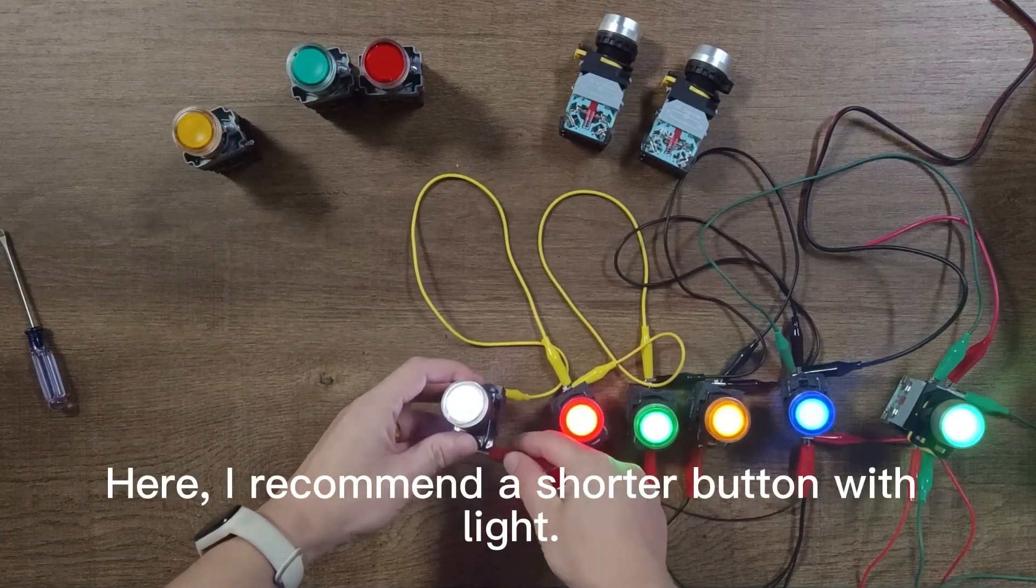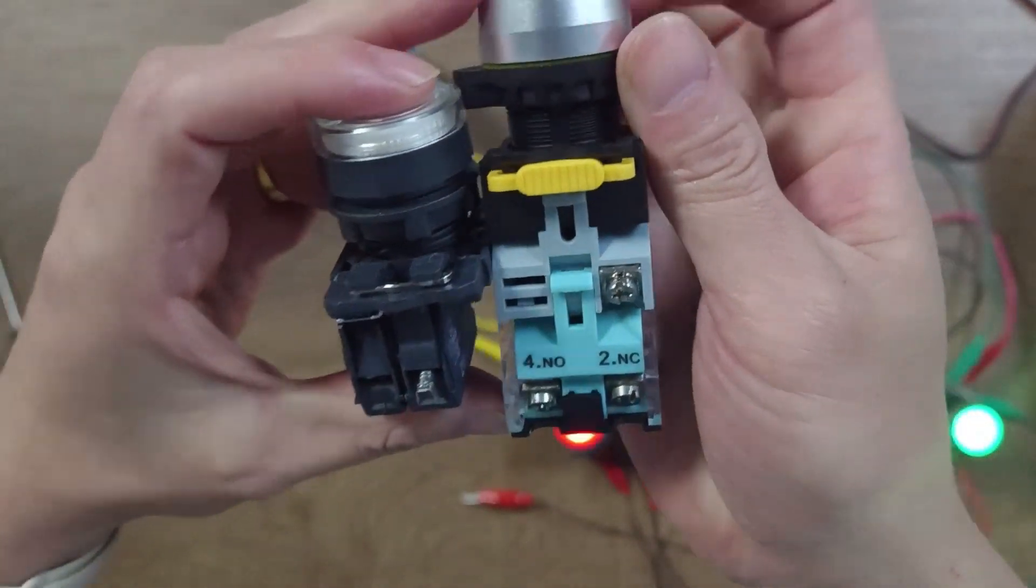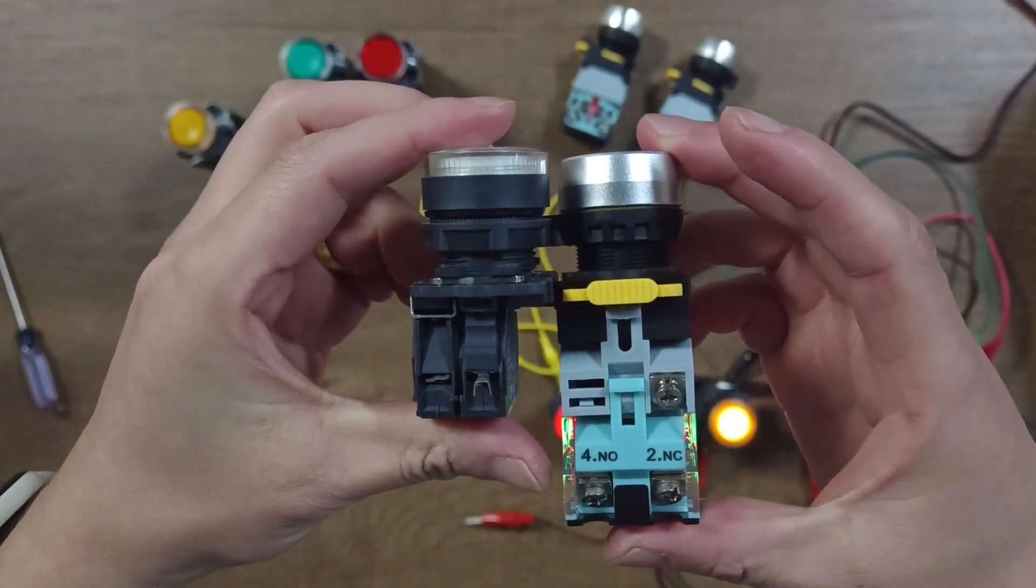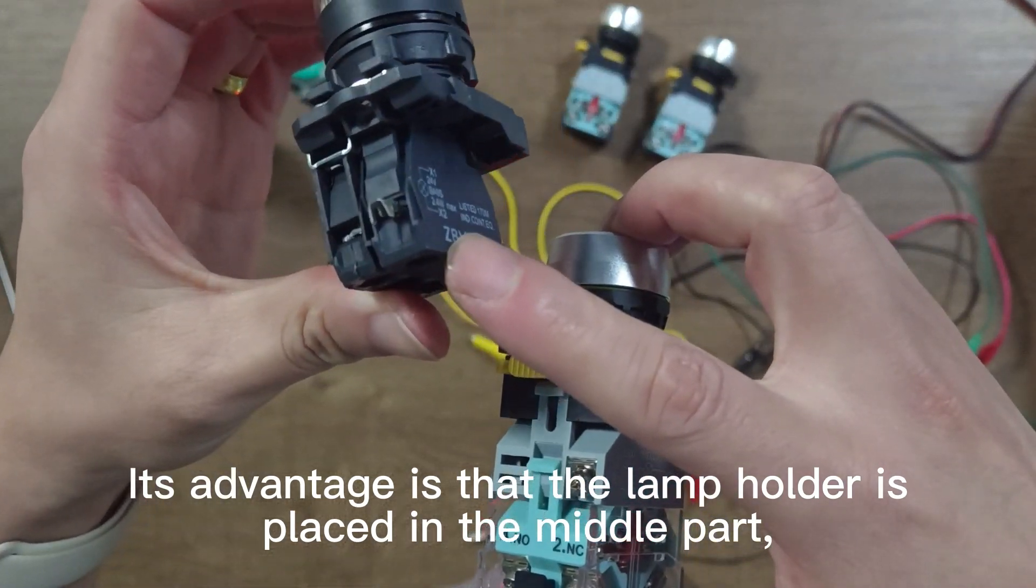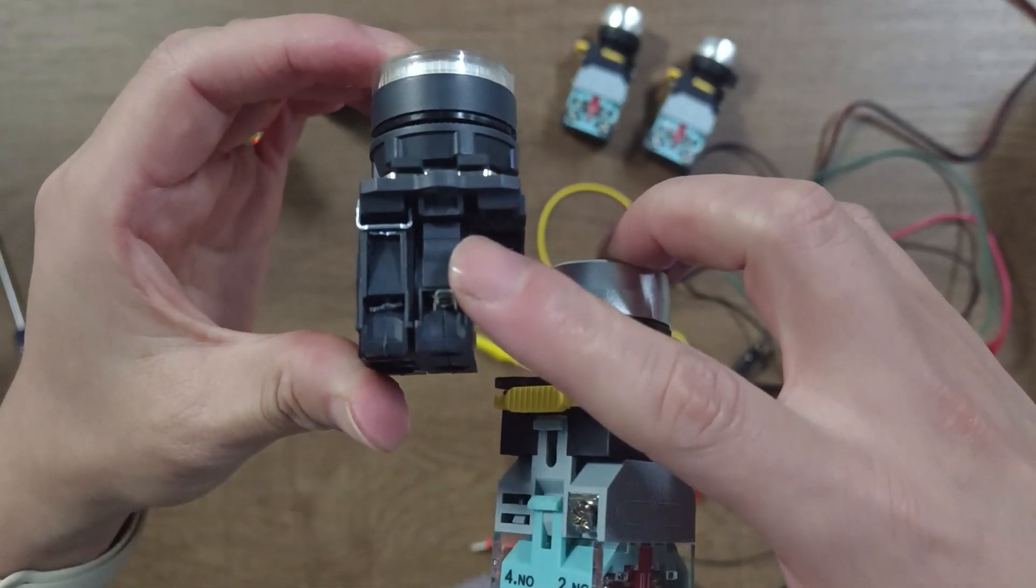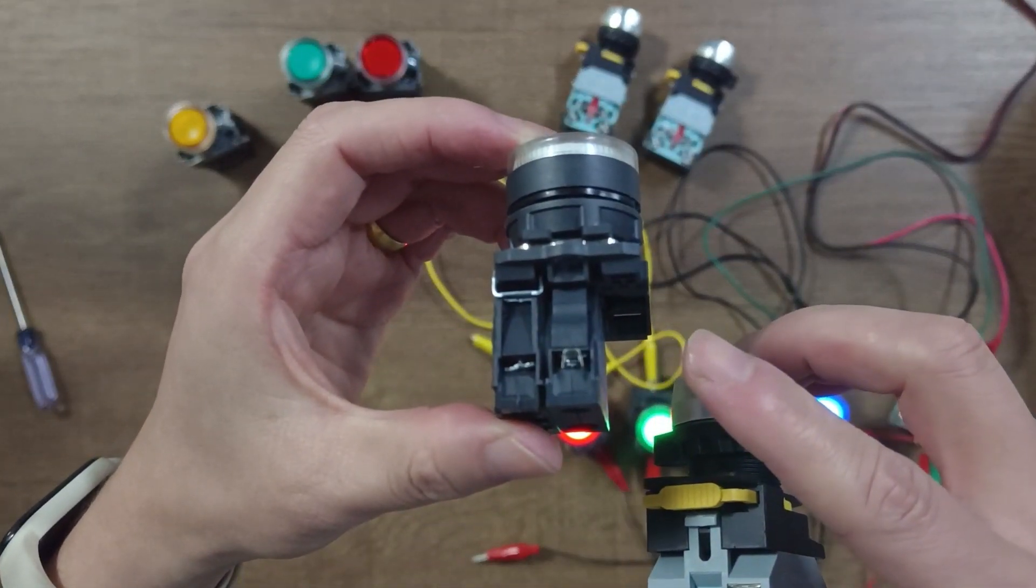Here, I recommend a shorter button with light. Its advantage is that the lamp holder is placed in the middle part. It is a three-piece top, and two contacts can also be installed.